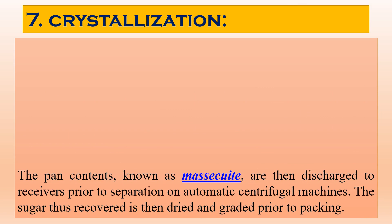Thus, the sugar is recovered, dried, graded, and then packed. By a series of various processes, we obtain refined white sugar.